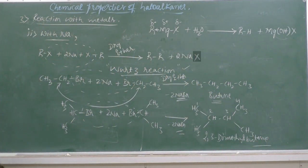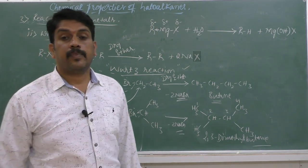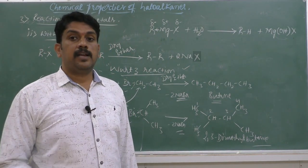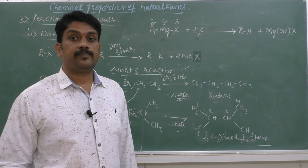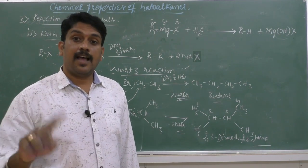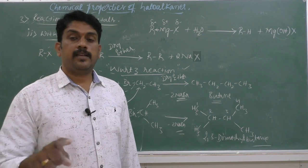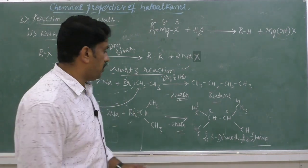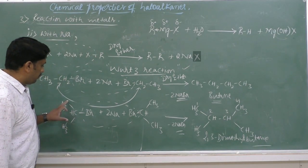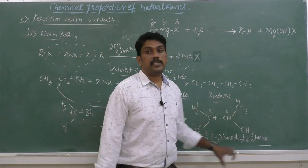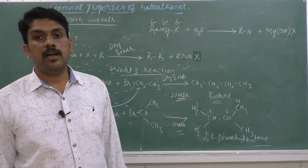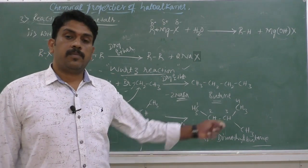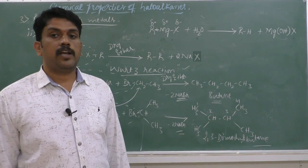So 2,3-dimethylbutane is obtained from isopropyl bromide via the Wurtz reaction. This reaction is used to prepare higher alkanes with twice the number of carbon atoms as the starting haloalkane — a carbon chain elongation reaction. The Wurtz reaction is useful for preparing symmetrical alkanes with an increased number of carbon atoms.